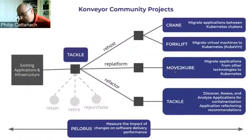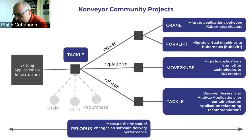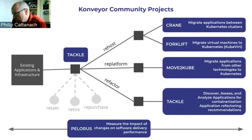This slide provides context about where Tackle sits among the other tools within the Conveyor organization. Tackle is used to do the initial assessment of applications and to determine the application modernization and migration outcomes — whether to re-host, re-platform, refactor, retain, retire, or repurchase those applications. Once those outcomes are known, the other tooling within Conveyor can be used to execute on those decisions.